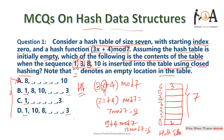Now let's add element 8: (3×8 + 4) mod 7 = 28 mod 7 = 0. Index 0 already has element 1, so a collision occurs. Using closed hashing, element 8 will be inserted at the next available index.